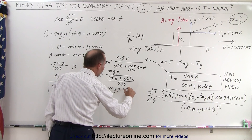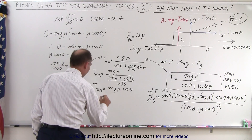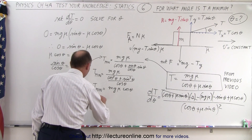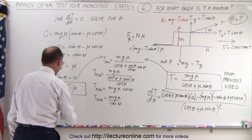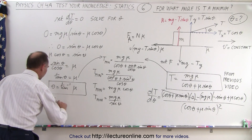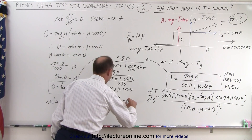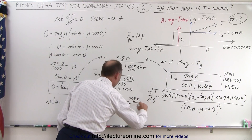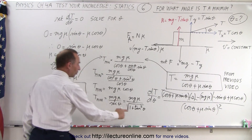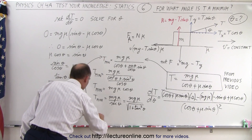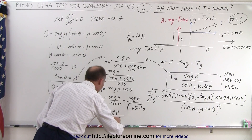That gives us T_min = mg·mu times cosine of theta. With a trigonometric trick, we replace cosine by 1 over the secant: T_min = mg·mu over the secant of theta. Since secant squared of theta equals 1 plus tangent squared of theta, the secant can be written as the square root of 1 plus tangent squared. So T_min = mg·mu divided by the square root of 1 plus tangent squared of theta. Since tangent of theta equals mu, tangent squared equals mu squared, giving T_min = mg·mu divided by the square root of 1 plus mu squared.